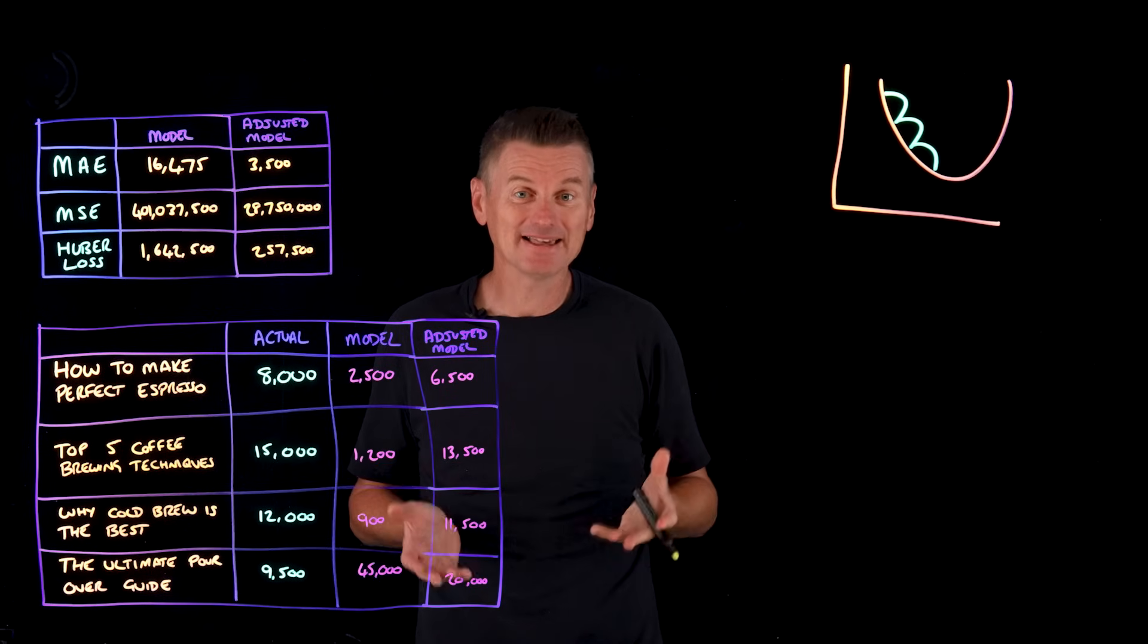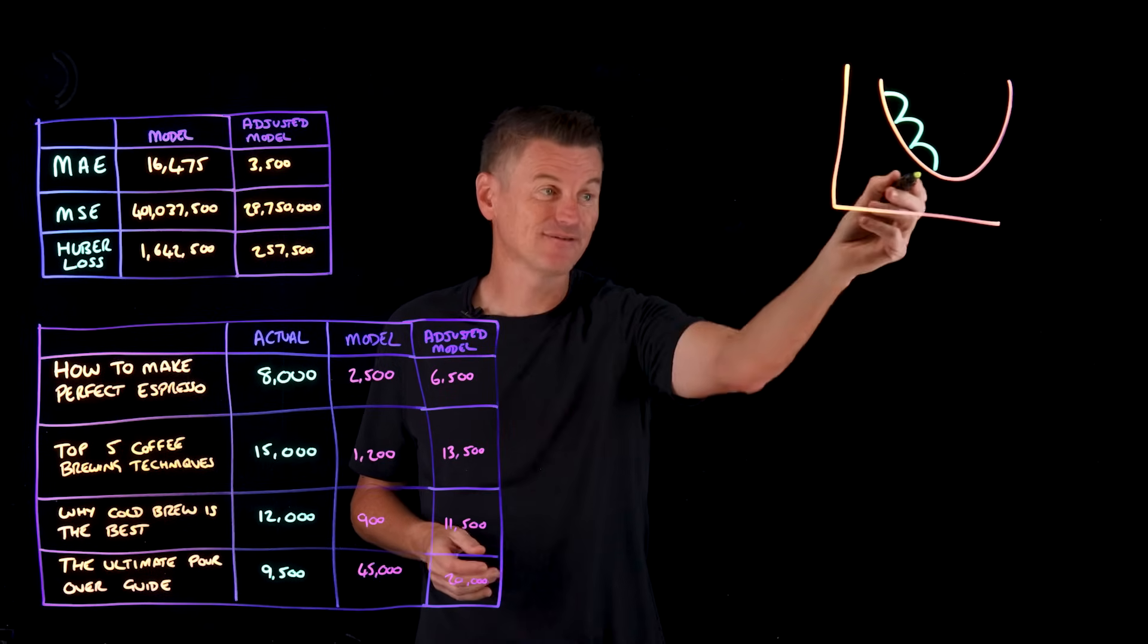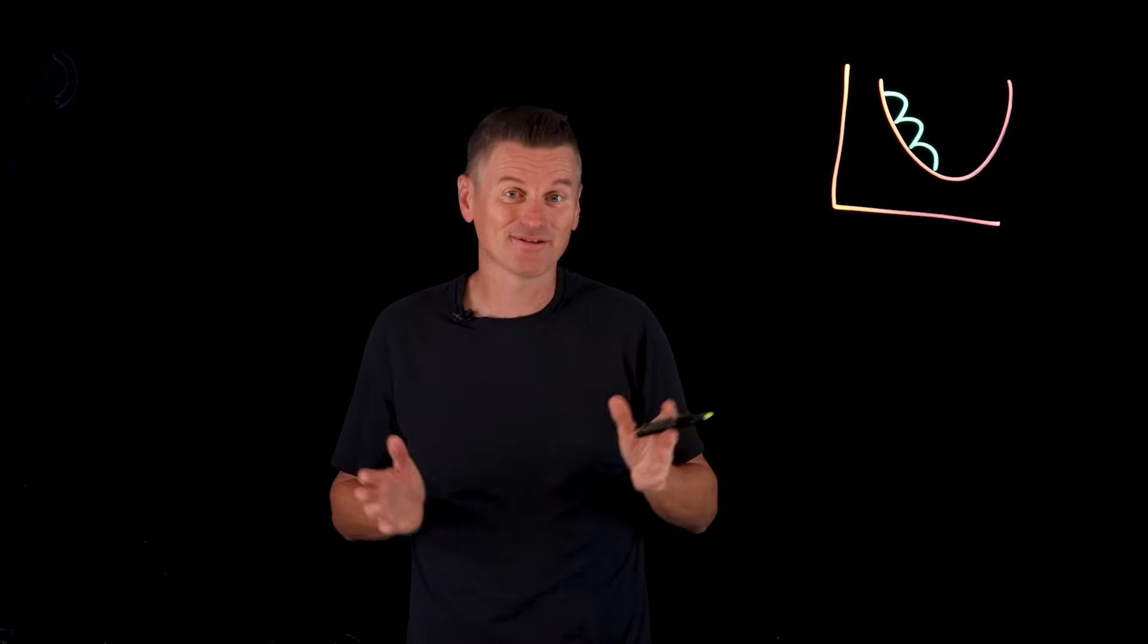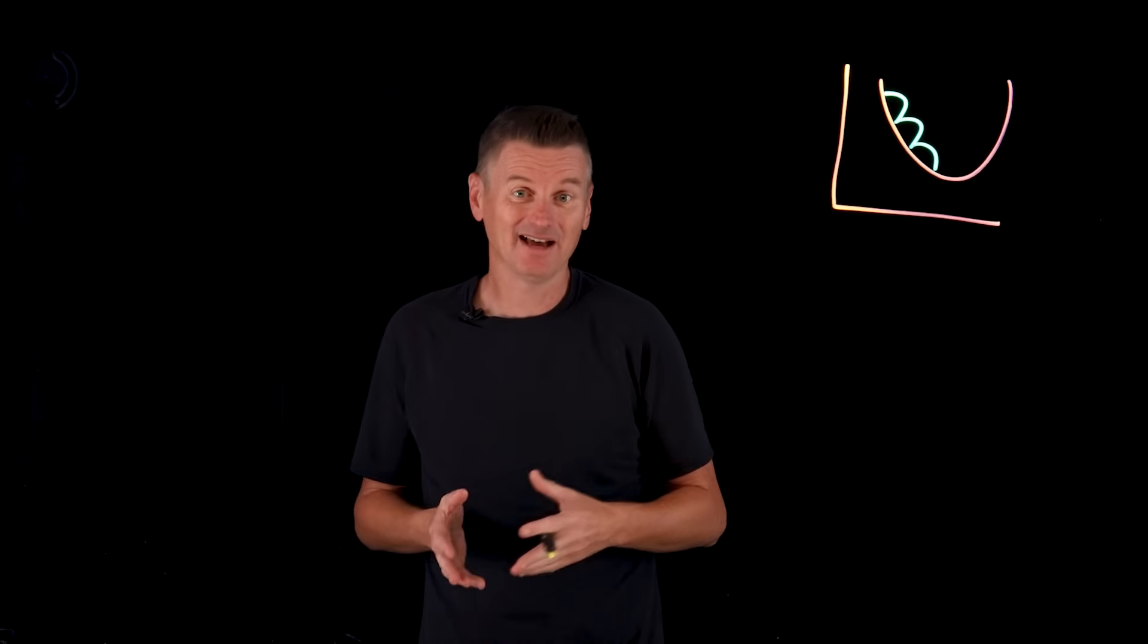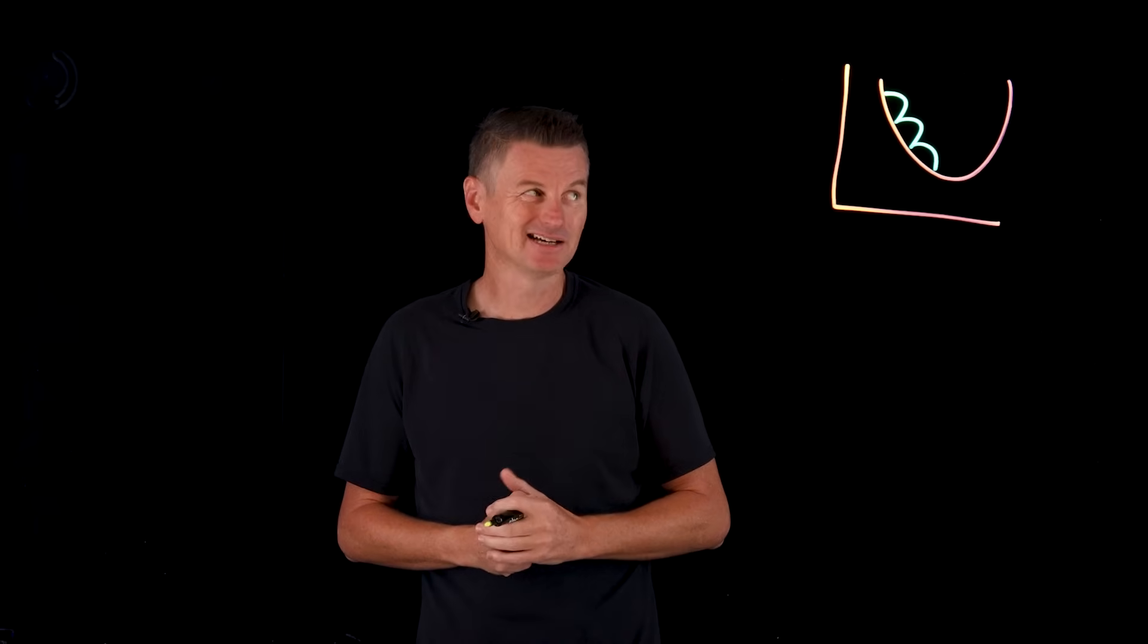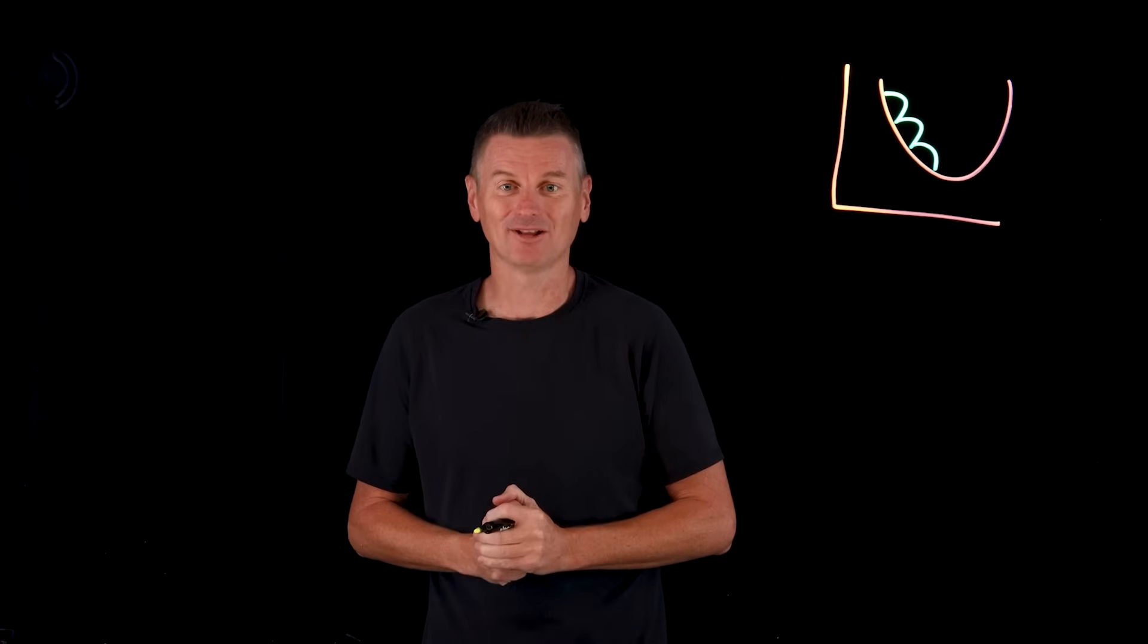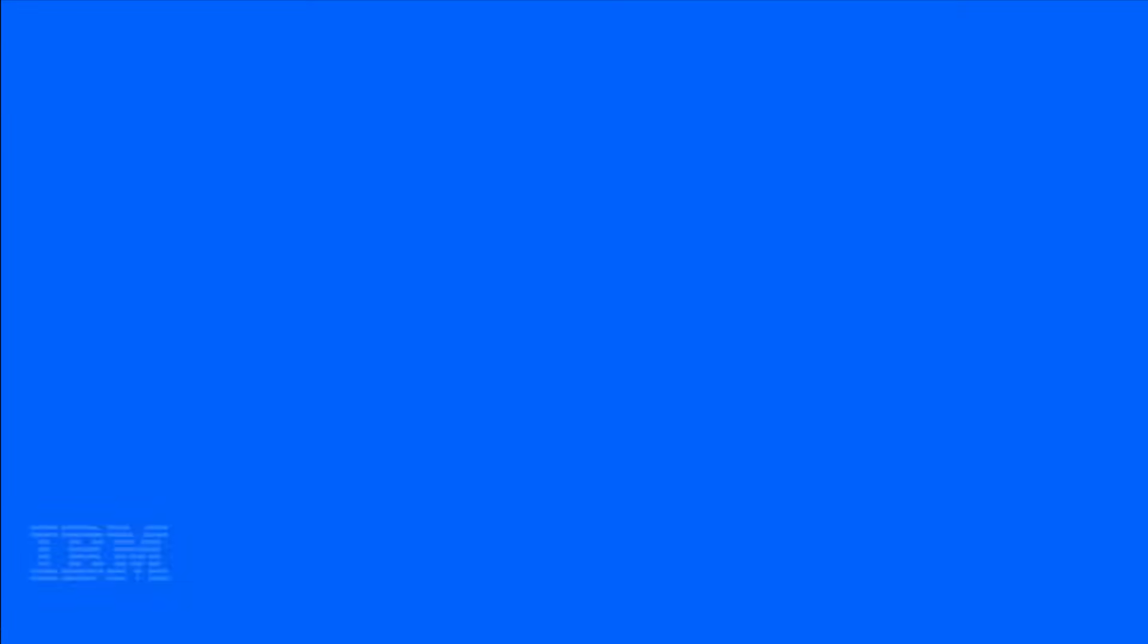The model learns by updating the weight and bias terms until the loss function has been sufficiently minimized. So that's loss function. It's both a scorekeeper that measures how well your model is performing and a guide that directs the model's learning process. Thanks to loss function, my colleague can keep tweaking his YouTube AI model to minimize the loss and teach that model to make better predictions.